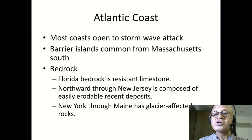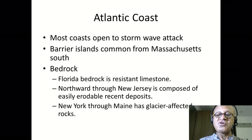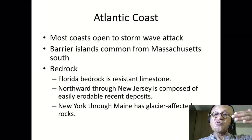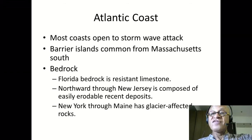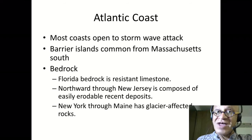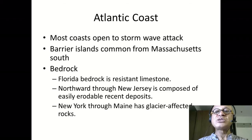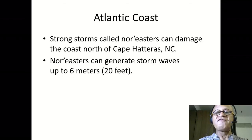Northward through New Jersey is composed of easily erodible recent deposits and then glacier-affected rocks. The Pleistocene glacier came all the way down to New York — a glacier erodes a lot of material. New York through Maine was occupied by glacier, so it has glacier-affected rocks that are predominant features to the north.